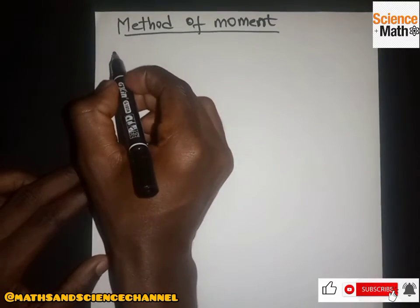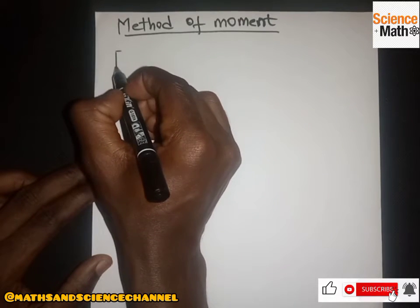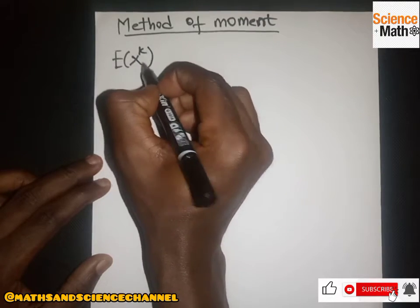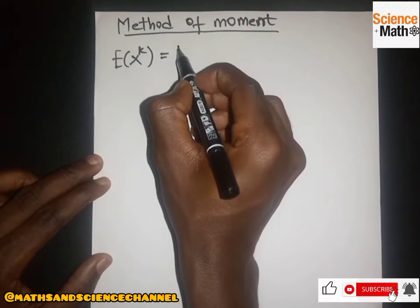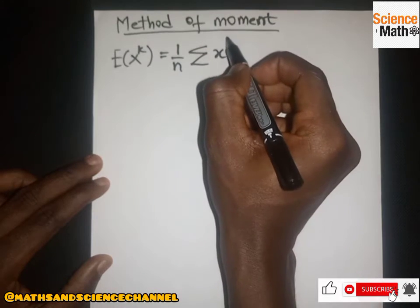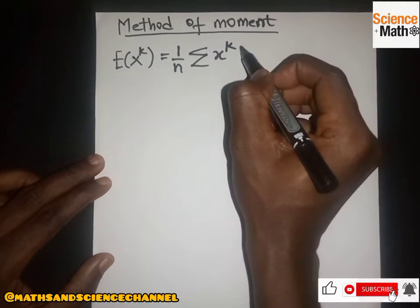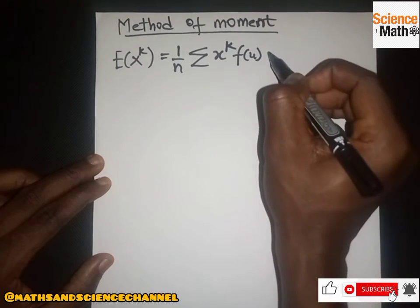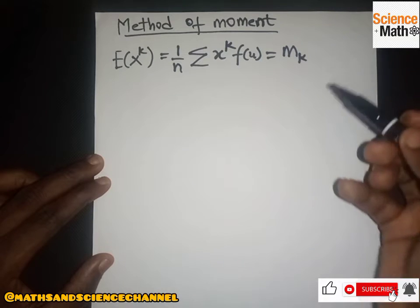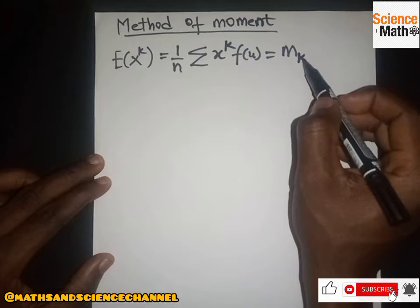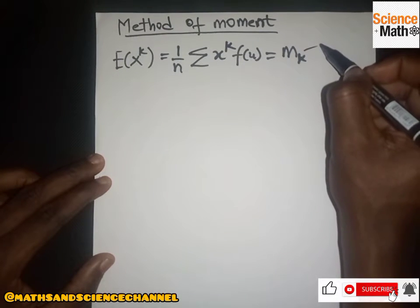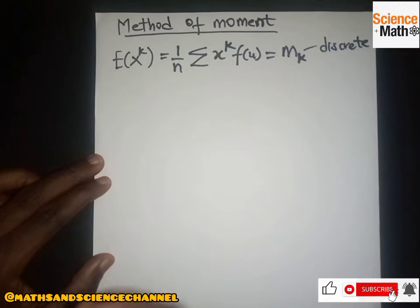In a discrete situation, the method of moments is given by the expectation of X to a particular exponent k, which equals one over the number of samples given, multiplied by the sum of the X values raised to the power k, times f of x. This is equal to the k-th moment — so we can have the first moment m1, the second moment m2, the third moment m3, and so on. This applies when you have a discrete variable.